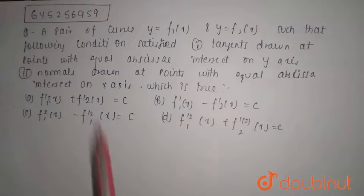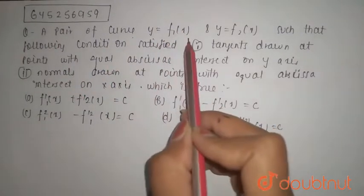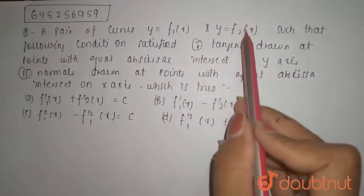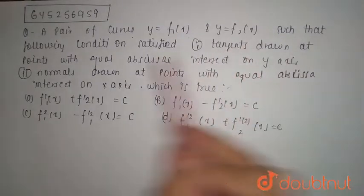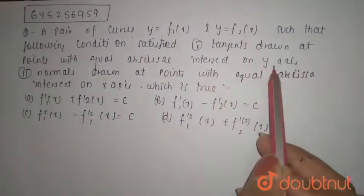Hello student, so today's question is: A pair of curves y equals f1(x), y equals f2(x) such that following conditions are satisfied. First, tangent drawn at points with equal abscissa intersect on y-axis.